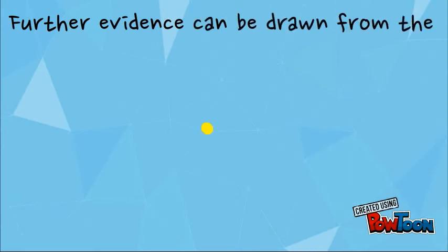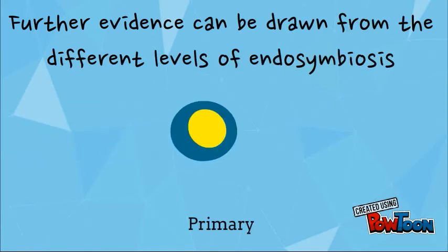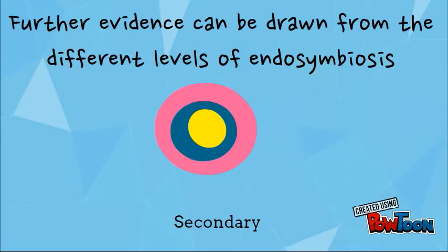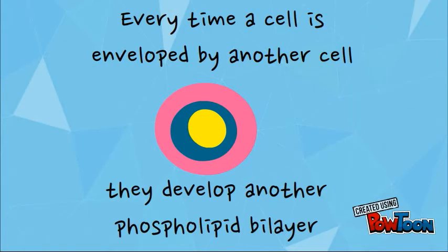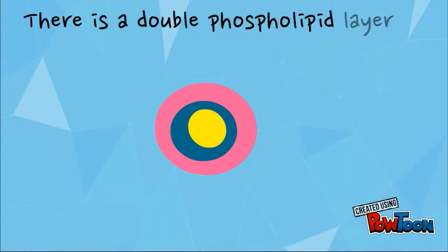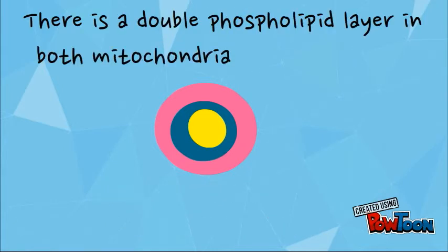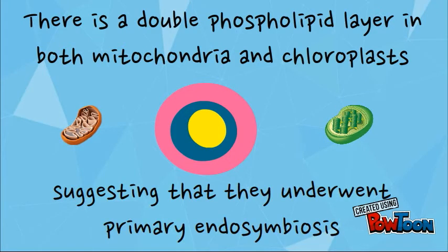Further evidence can be drawn from the different levels of endosymbiosis. Every time a cell is enveloped by another cell, they develop another phospholipid bilayer. There is a double phospholipid layer in both mitochondria and chloroplast, suggesting they underwent primary endosymbiosis.